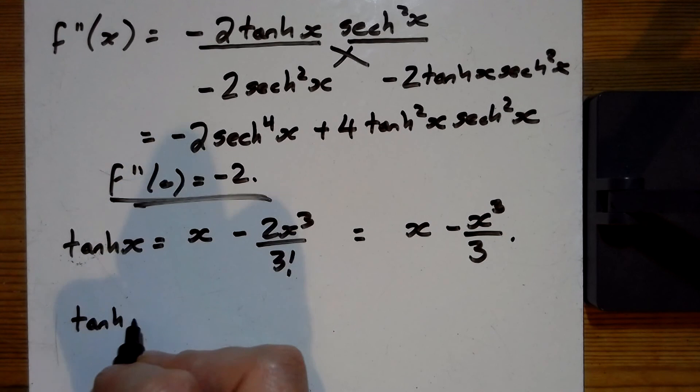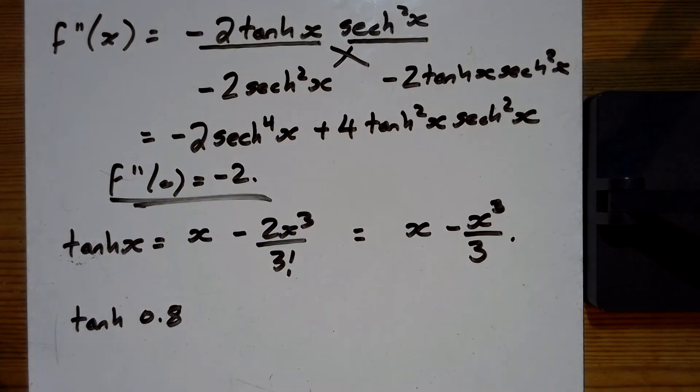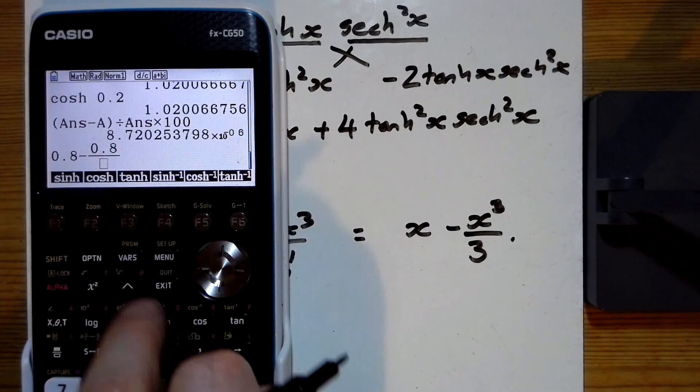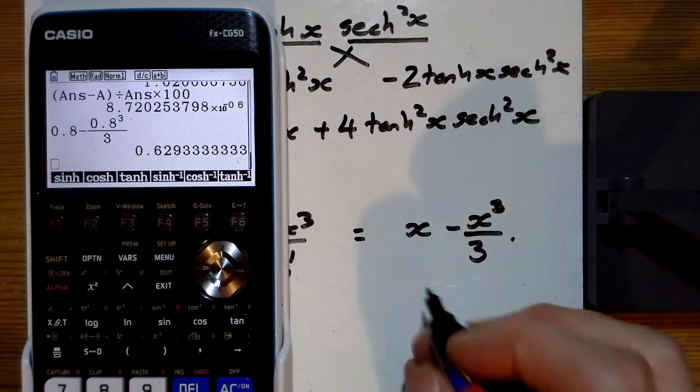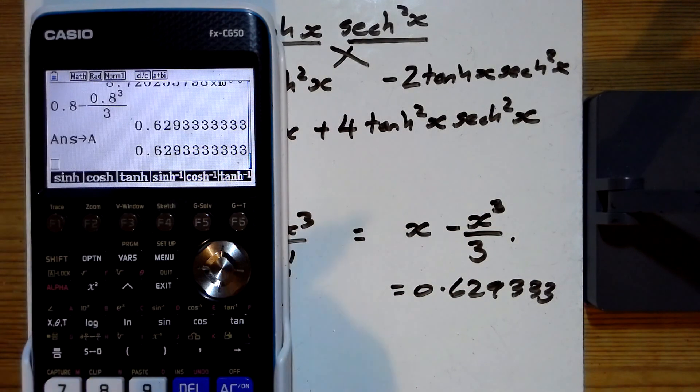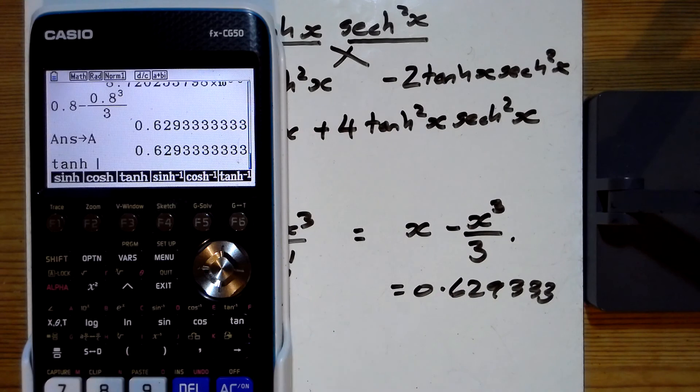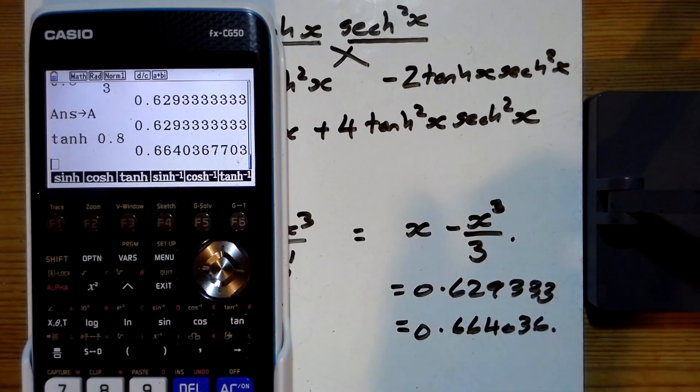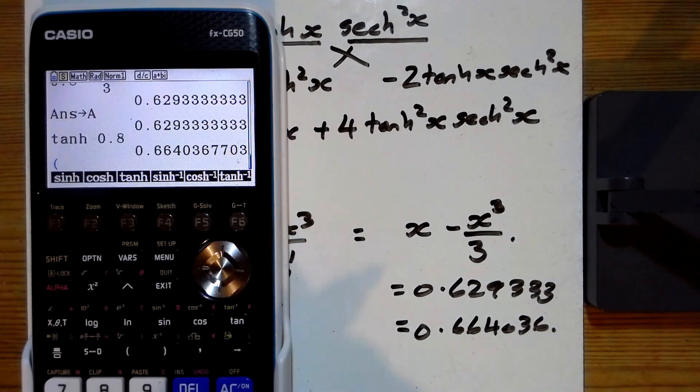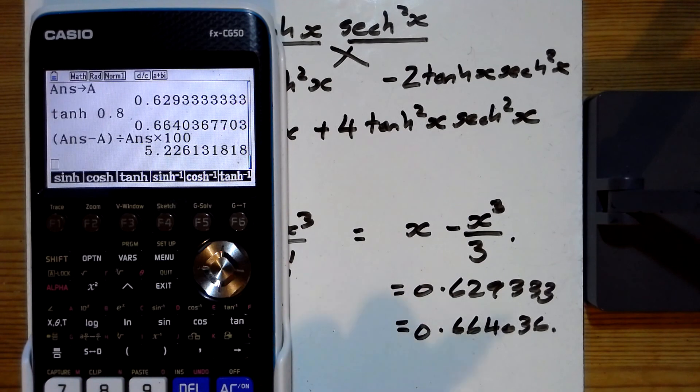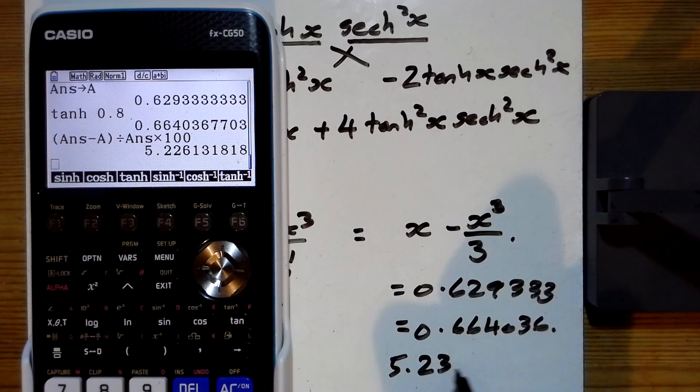Right, just a bit at the end then. So we're looking for what happens at 0.8. So let's just stick this in the calculator here then. So 0.8 minus the fraction 0.8 cubed over 3. So that gives 0.629333. I'm going to store that in there. And then the tanh of 0.8 is actually, oh, it's a little bit further out than the last one, isn't it? 6, 6, 4, 0, 3, 6. So I'm going to do open brackets. Answer. Take away what I put in A, close brackets, divided by the answer. And I'm times that by 100 to change it into a percentage. And I'm getting 5.23% error.